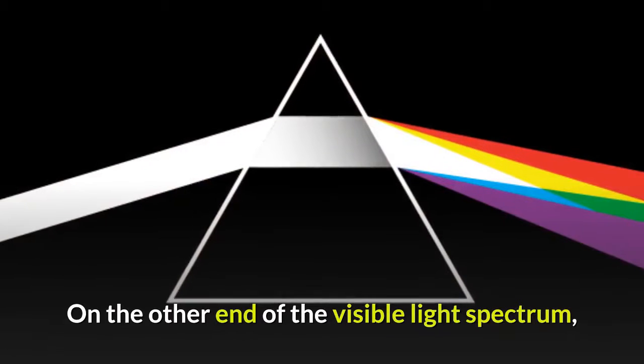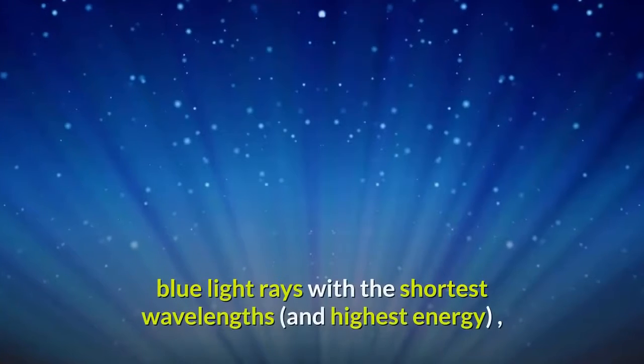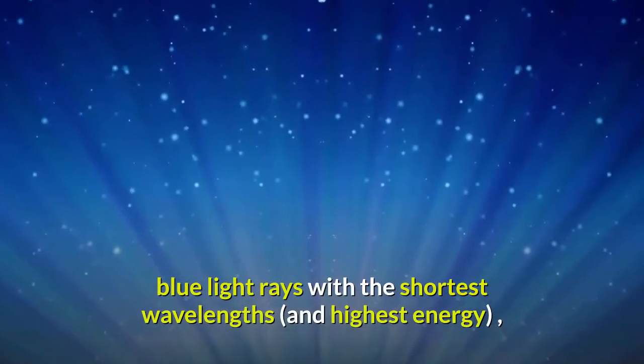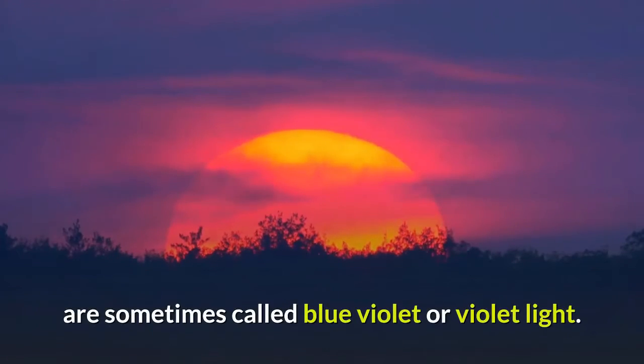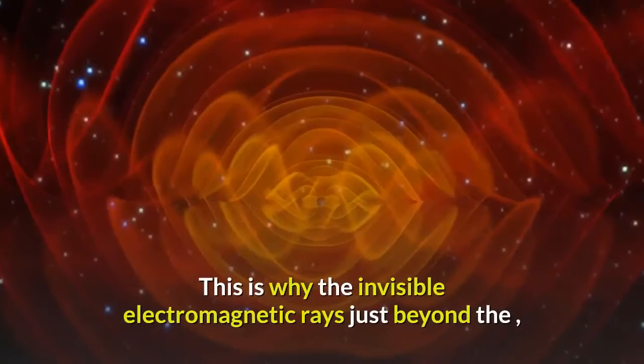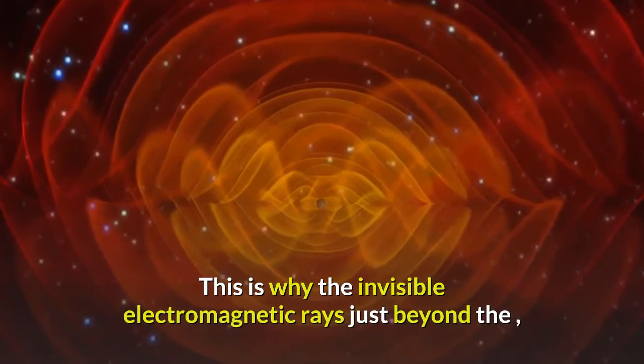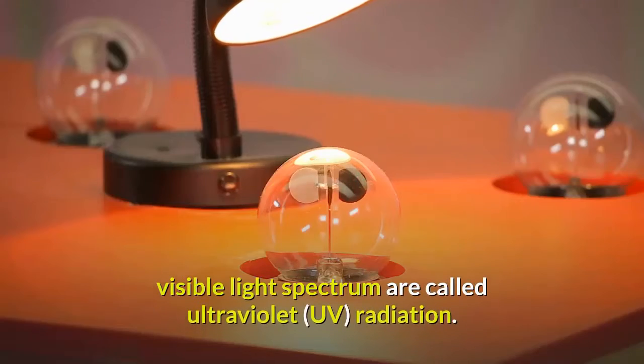On the other end of the visible light spectrum, blue light rays with the shortest wavelengths and highest energy are sometimes called blue-violet or violet light. This is why the invisible electromagnetic rays just beyond the visible light spectrum are called ultraviolet radiation.